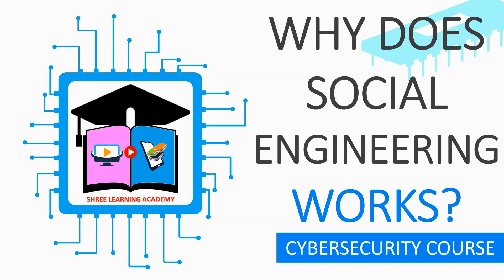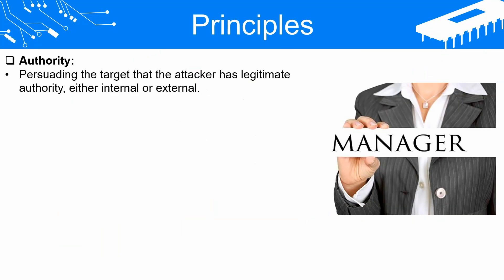Welcome to Shree Learning Academy. Our today's topic is why does social engineering work? The reason why social engineering is effective is because we are human. Social engineering tactics are formulated to exploit different facets of human behavior. While not all individuals may fall prey to every attempt, the majority of us can be susceptible to at least one of these commonly used social engineering principles.